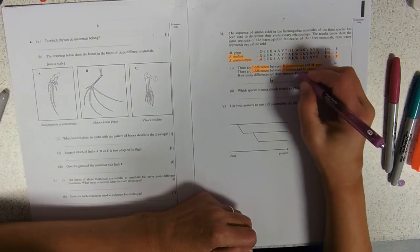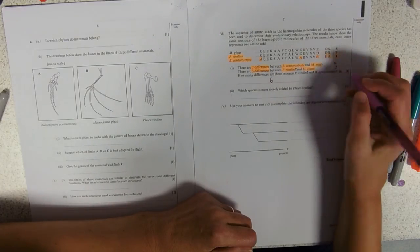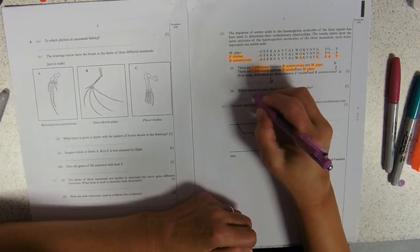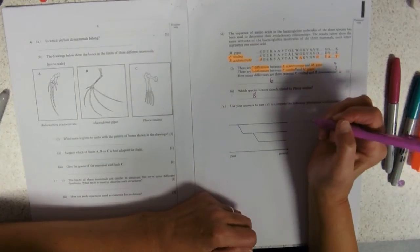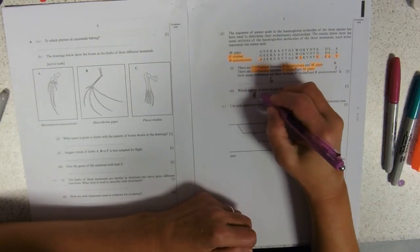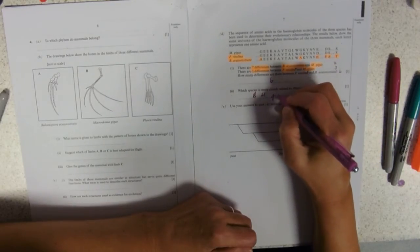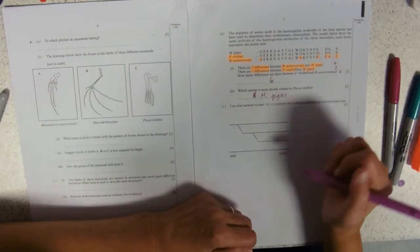So, P. vitulina, that's this one, and this one. Three and six differences. Sorry, no, it's not M. gigas. Read the question properly. M. gigas, only three differences.